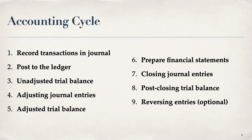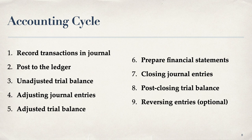Step six is preparing the financial statements: the income statement, balance sheet, cash flow statement, and statement of stockholders' equity. Then at the end of the period we make closing entries — step seven. We close revenues, expenses, and dividends using an account called Income Summary. These accounts are called nominal or temporary accounts. For example, we close 2019 revenue to zero and then start fresh with 2020 revenue. An optional step eight is the post-closing trial balance to confirm everything is still in balance; at that point only assets, liabilities, and equity remain — no revenues or expenses.